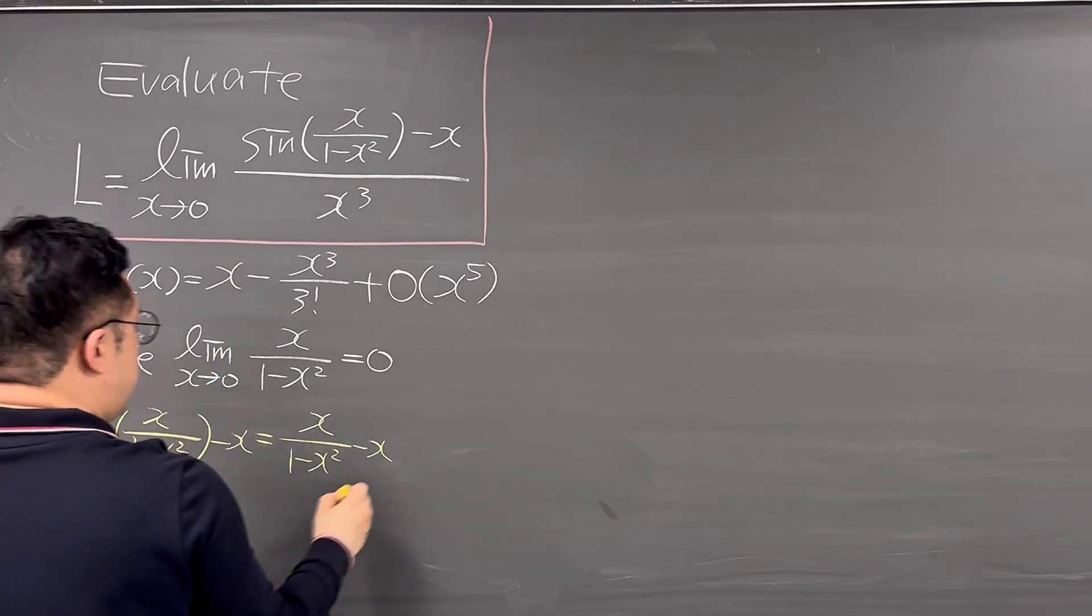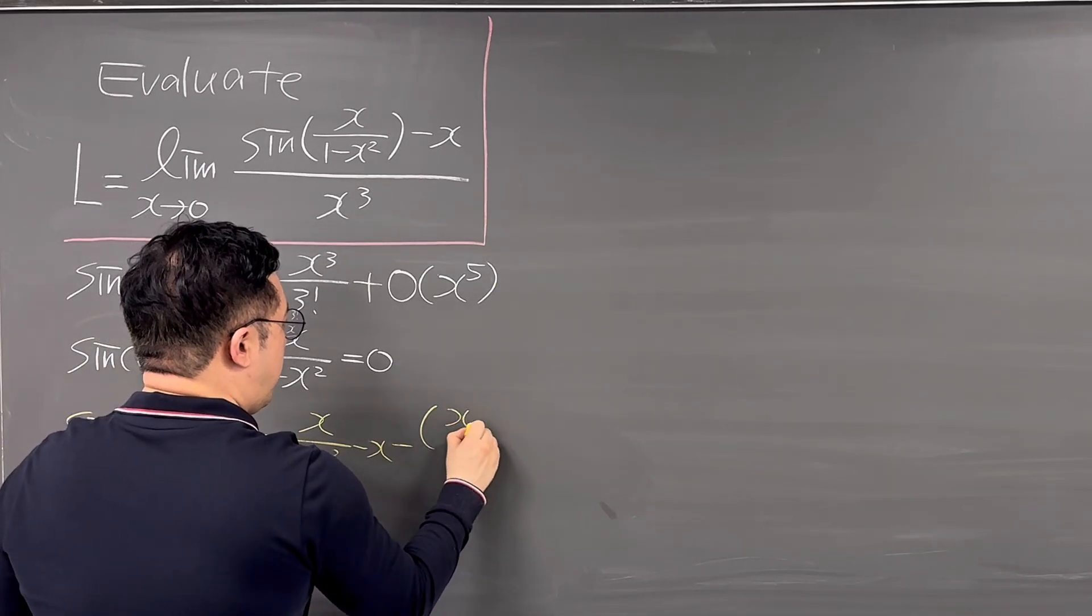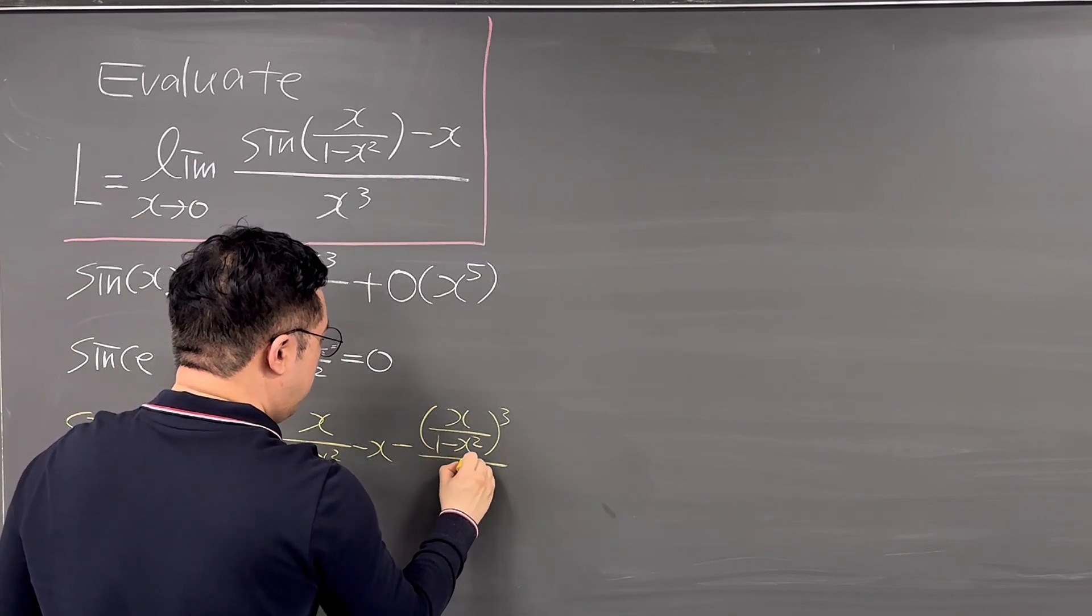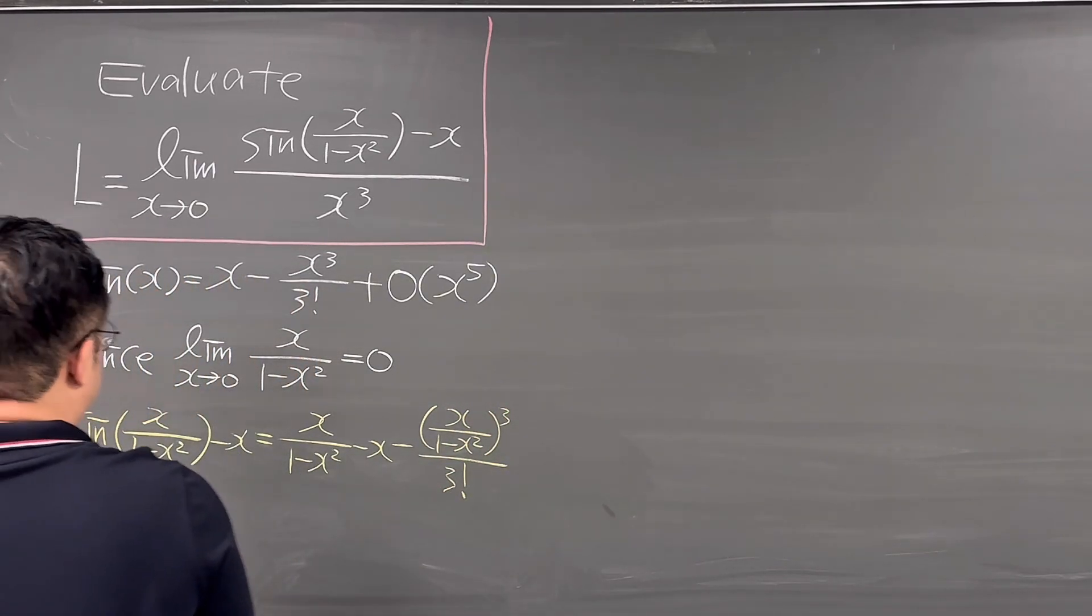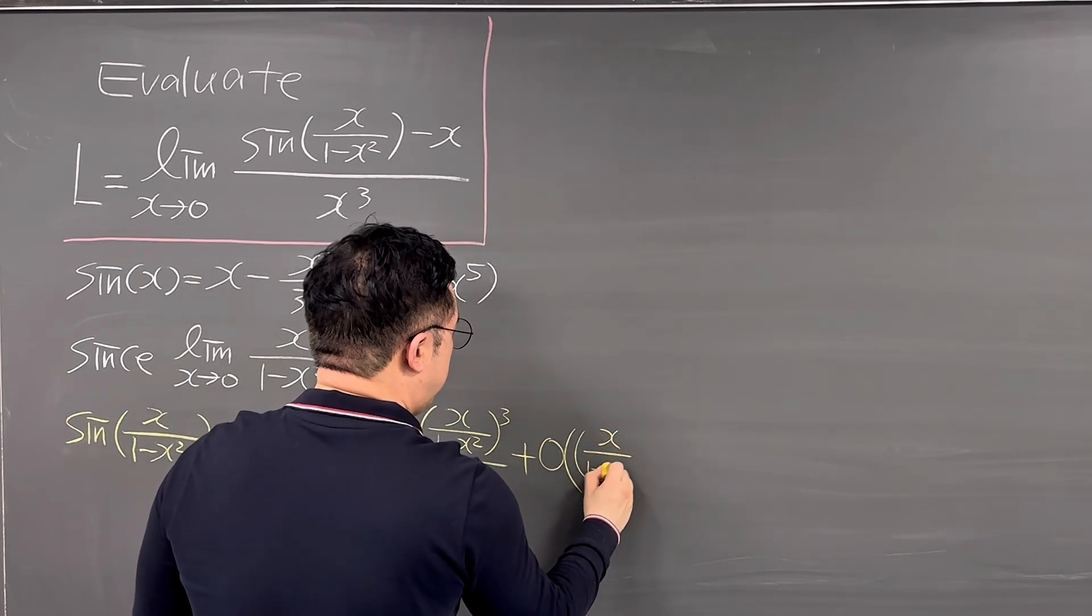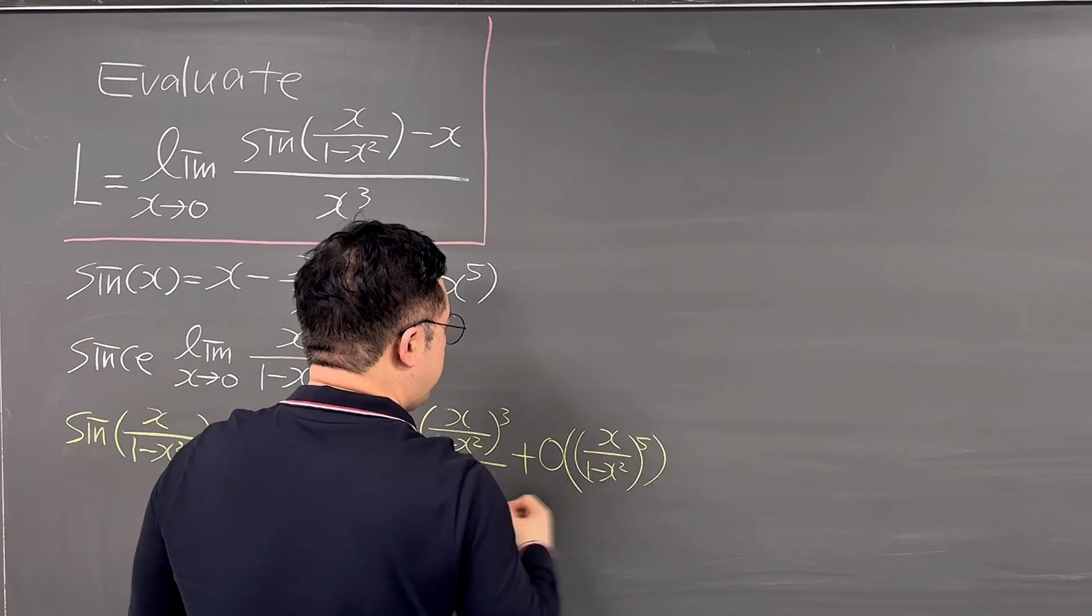Okay, then we have minus the whole thing, X over 1 minus X squared, now cubed, over 3 factorial, and then plus the big O of everything, X over 1 minus X squared to the power of 5.